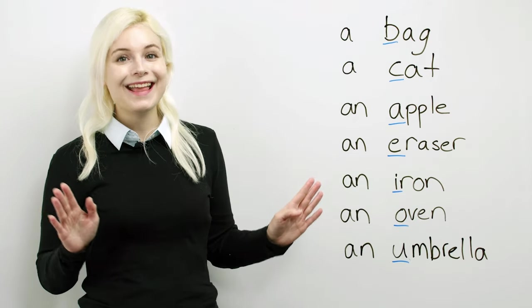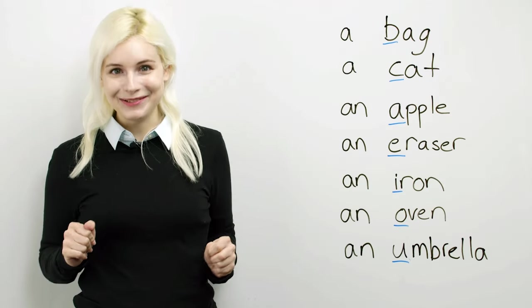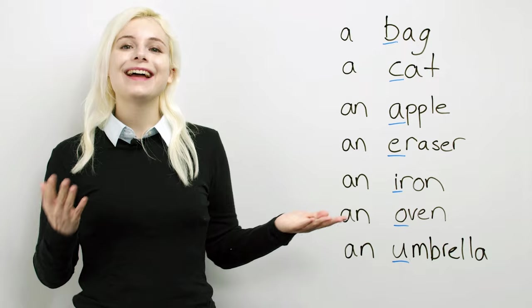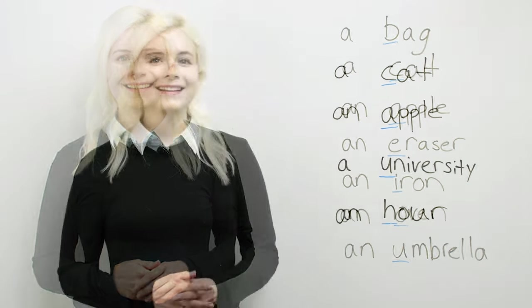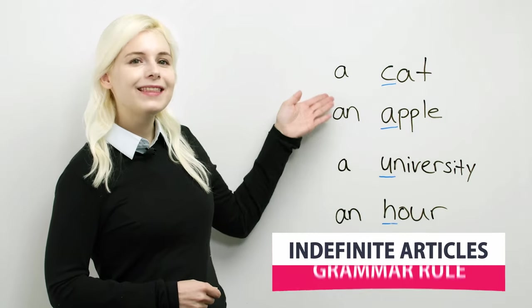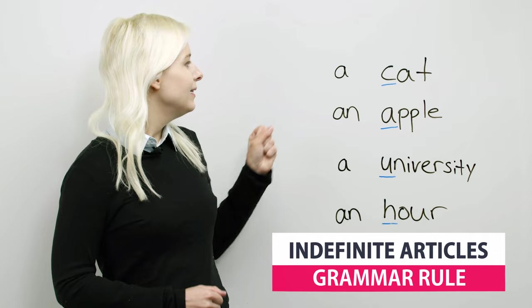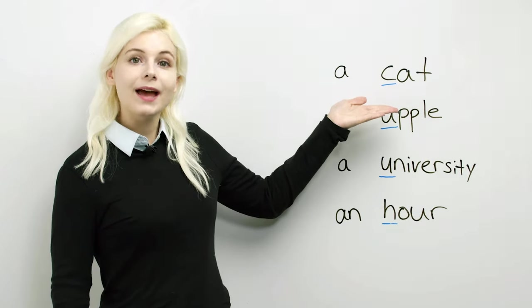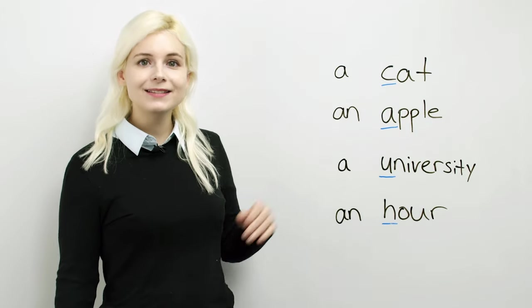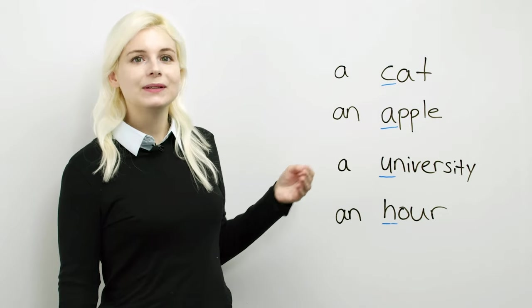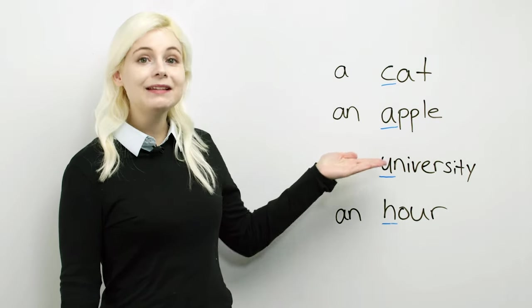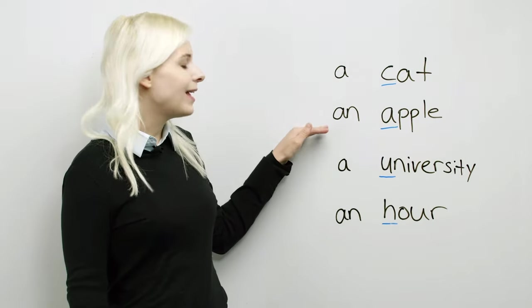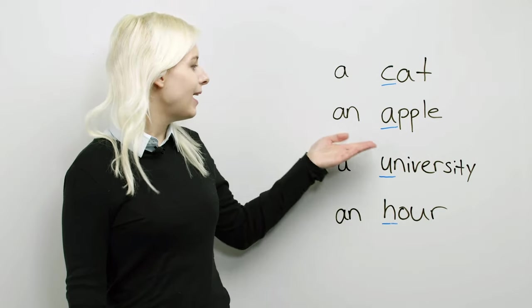But actually, this is not the real rule. Let's take a look at the next board. So again, let's look at these two first examples. A cat, cat starts with a C, that's a consonant, that's right. An apple, apple starts with an A, that's a vowel, so that's also correct, an apple.